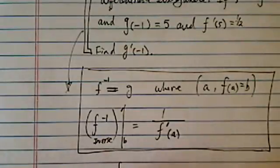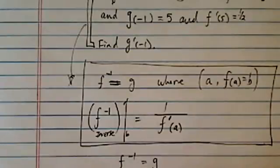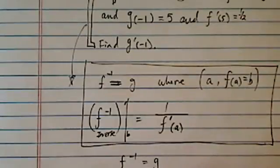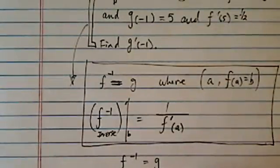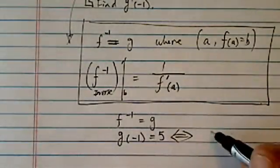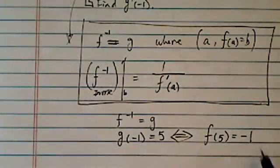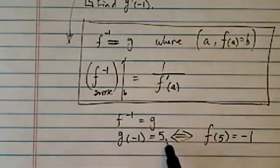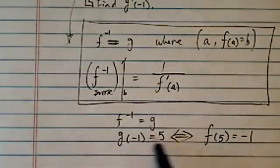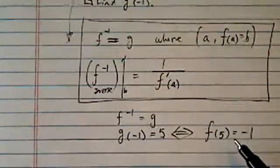We're given that f inverse equals g and, this is a backward clue, g(-1) = 5. You've got to read this clue clearly in that since g is the inverse, that's saying f(5) = -1. That makes sense, right? Because this g is the inverse function. The inverse takes the value, gives it back to the x, so f of our original function at 5 is equal to -1.